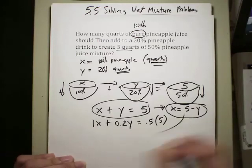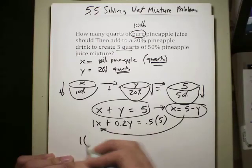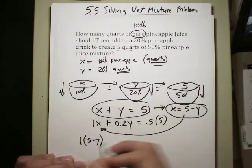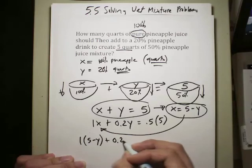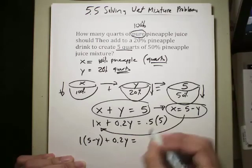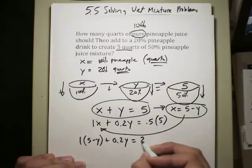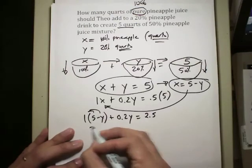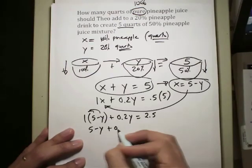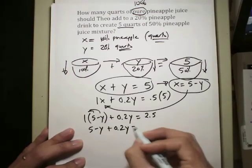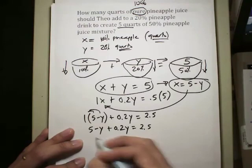So every time I see X, I can replace that with 5 minus Y. So I plug that right back into my second equation. So I have 1 times 5 minus Y plus 0.2 times Y equals to 0.5, which is 1 half, right? Half of 5 is 2.5. So if I clean this up, it's just going to be 5 minus Y plus 2 tenths of Y equals 2.5.